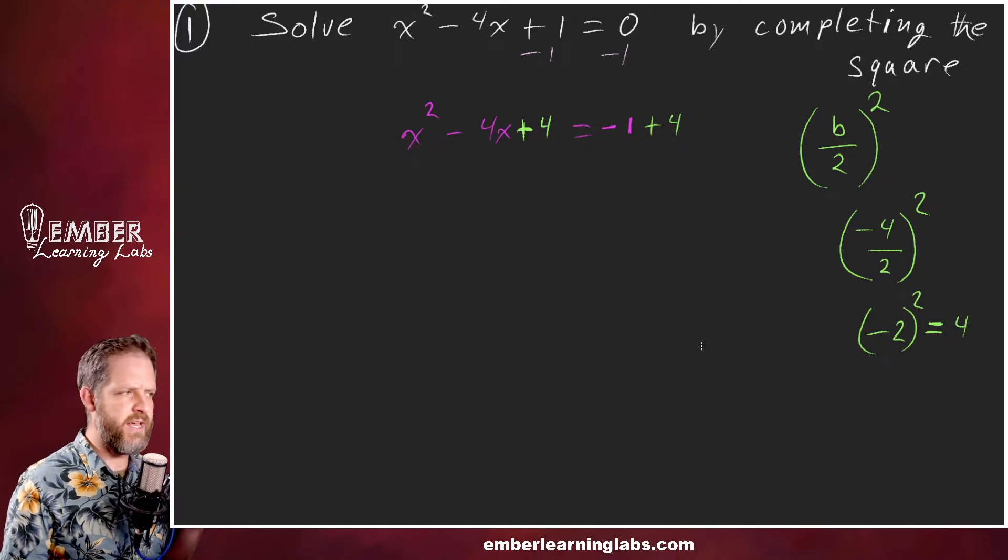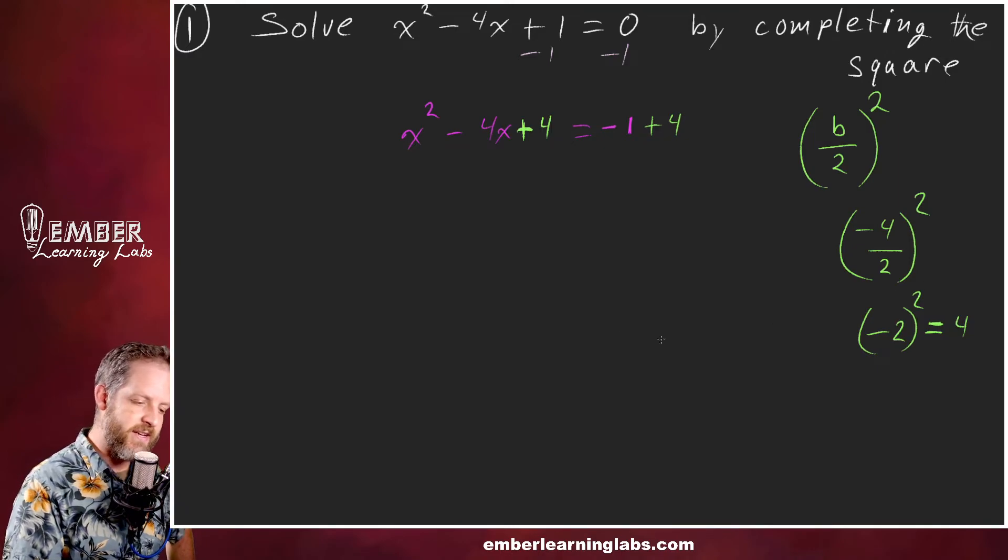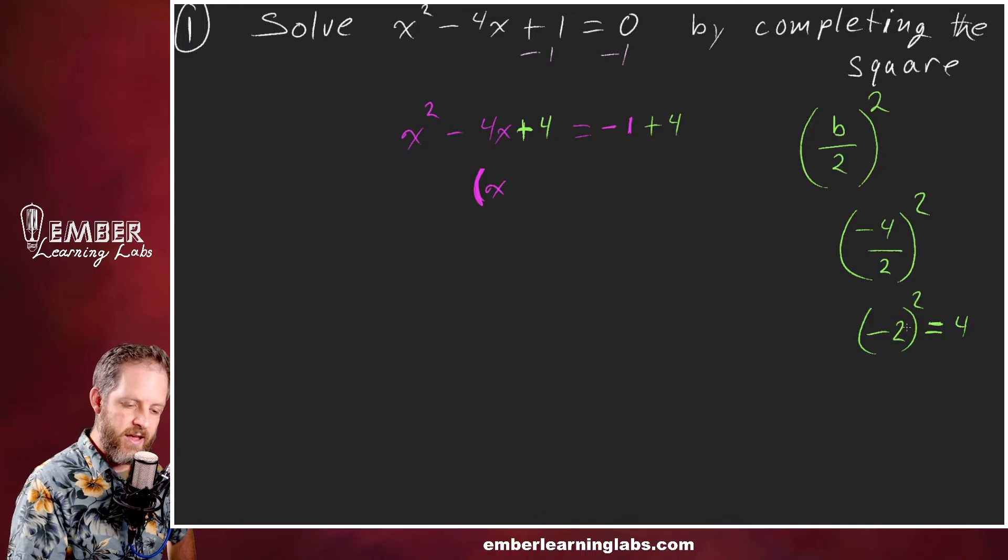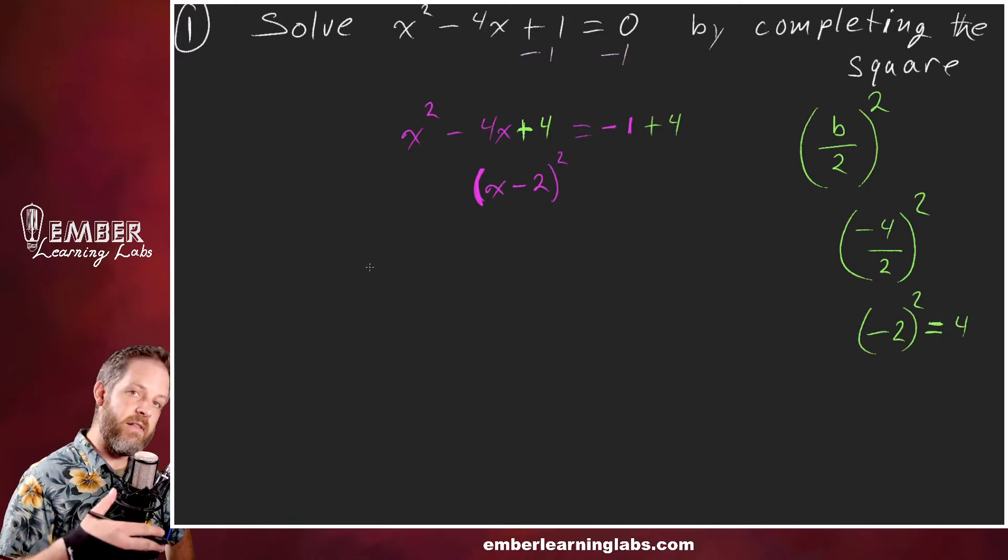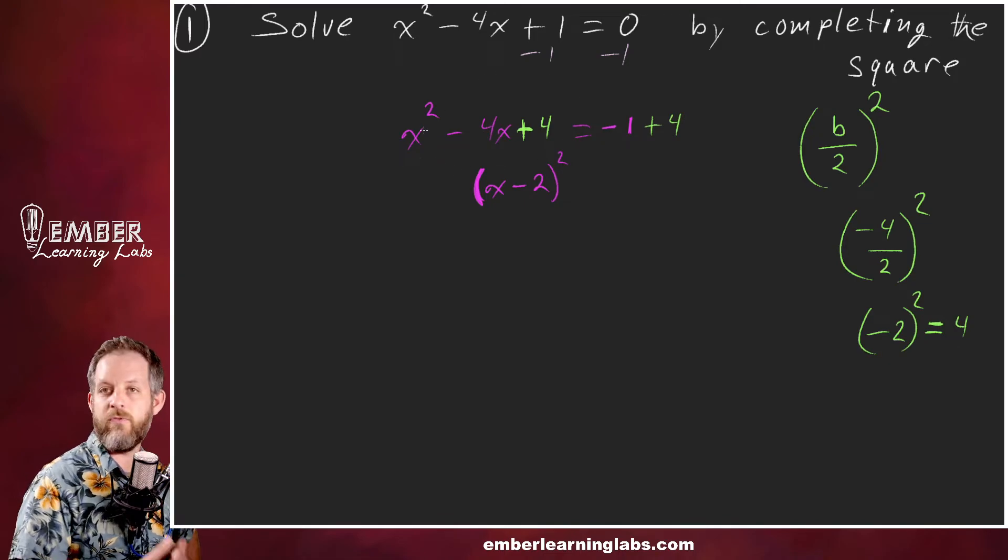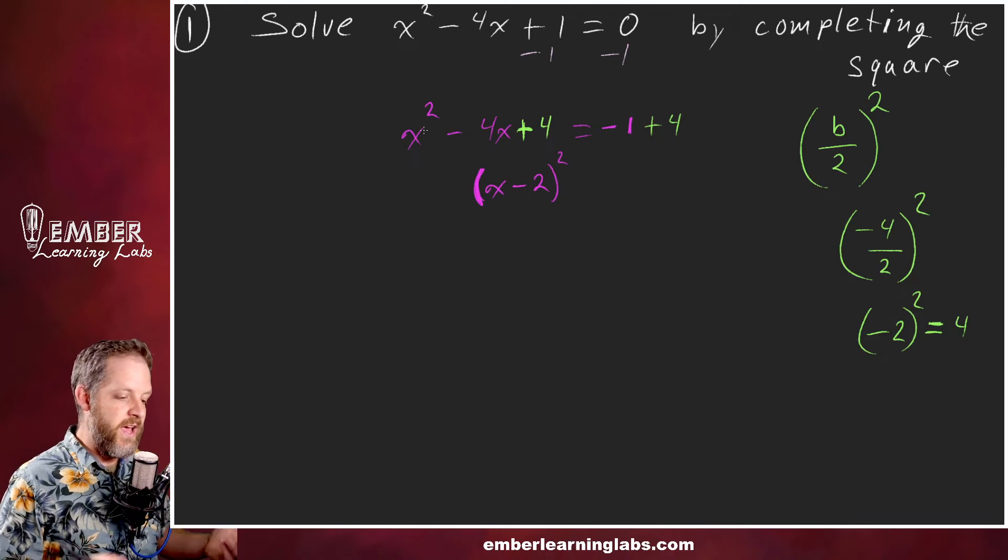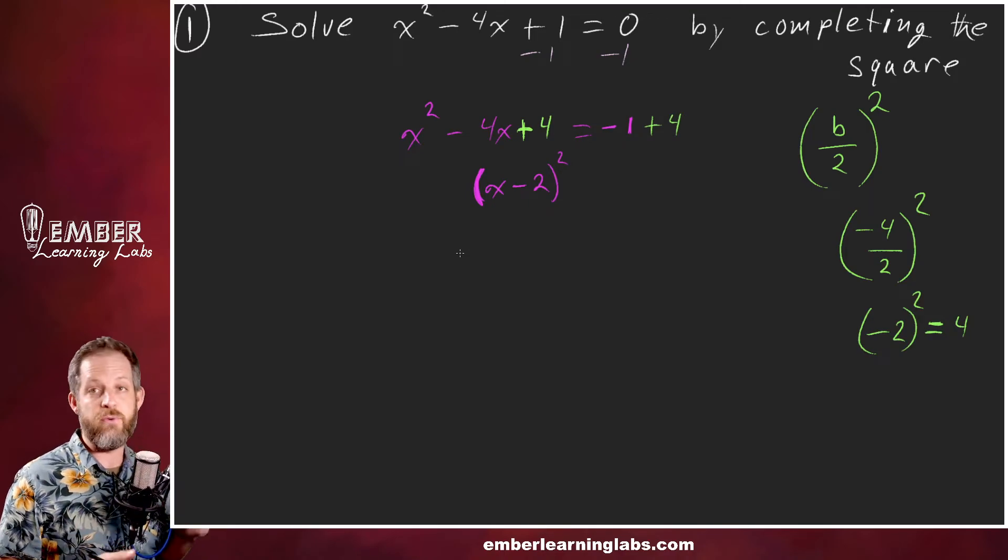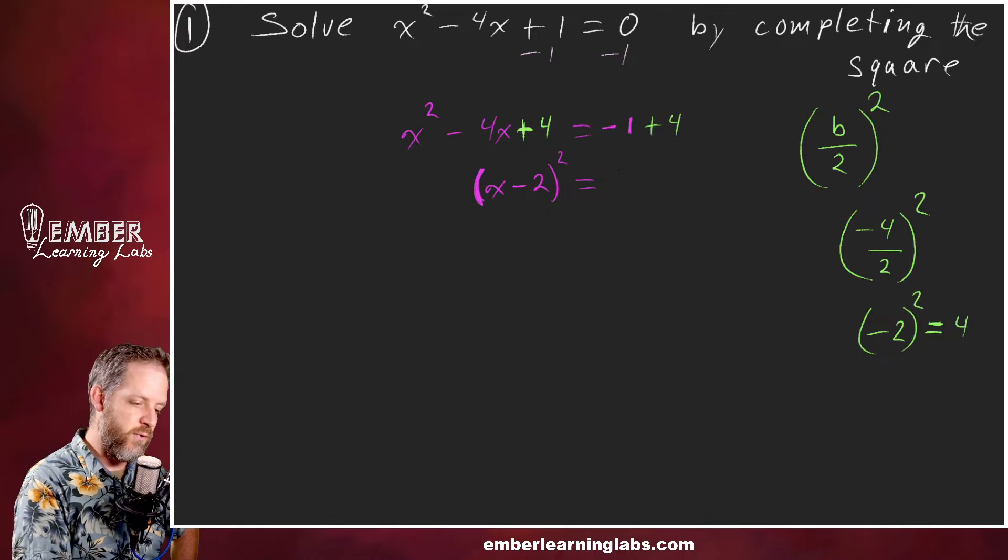On this left side now we can factor it. What's really cool is it always, always, always is going to be x and then plus or minus this number, so x minus 2 in this case. Always going to be that b divided by 2. It'll be x minus 2 times x minus 2, which is x minus 2 squared, and it will always factor into that for completing the square. So this turns into that, and then equals negative 1 plus 4 is 3.